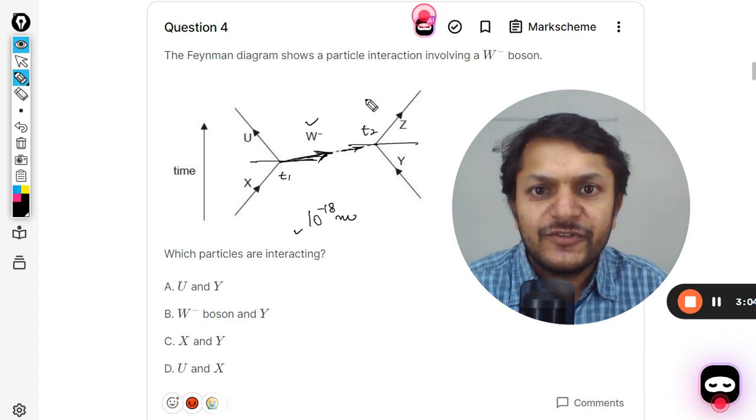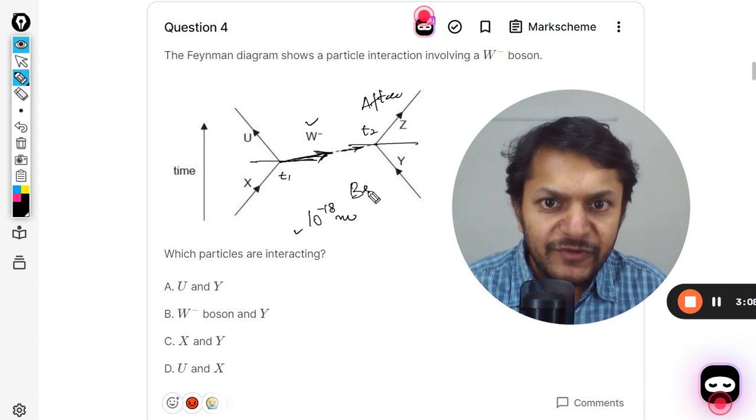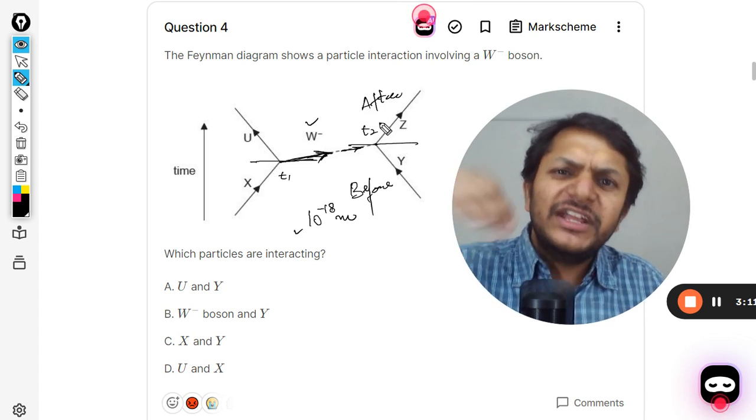W negative is absorbed by Y and after this time you can see, this is after and beyond this line is before the event.